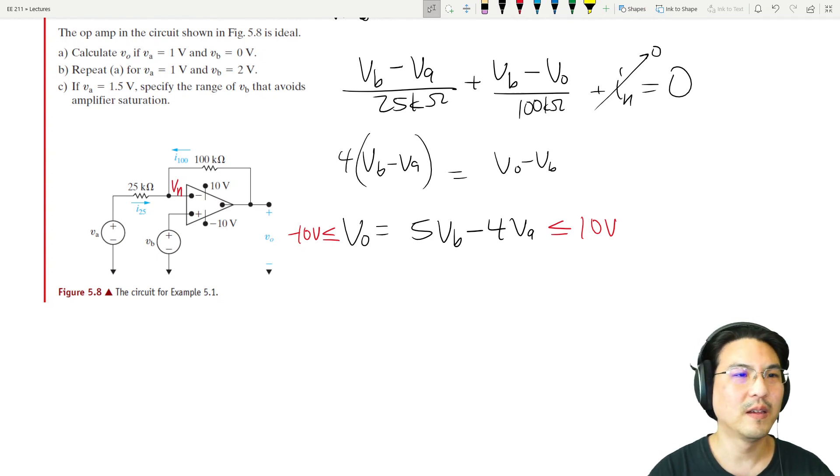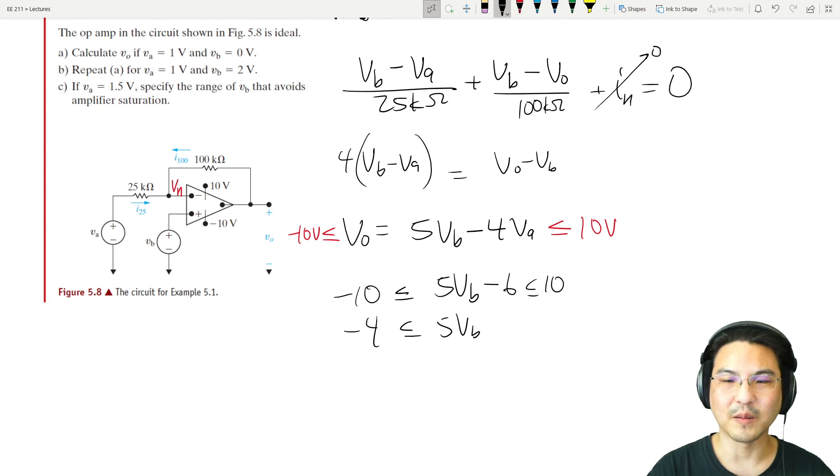Okay, part C. If VA is 1.5 volts, what's the range of B that avoids saturation? Okay, so it looks like 5VB and then VA was 1.5. So times 4 is 6. Okay, so it's asking us to solve for VB. So let me add 6 everywhere. So negative 10 plus 6, 10 plus 6. And then divide by 5. And here we go. So VB is in this range right here.